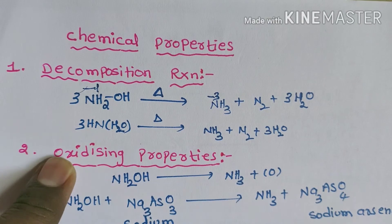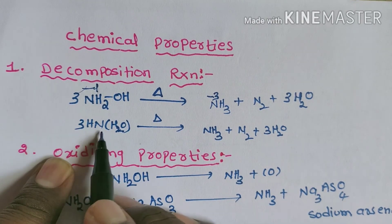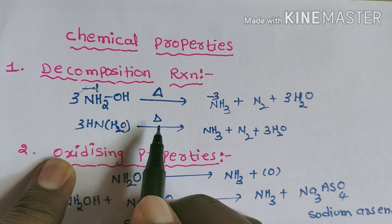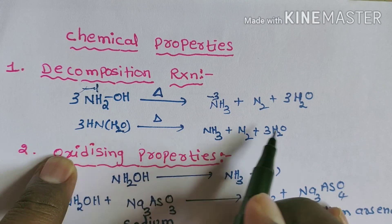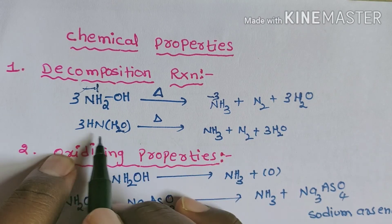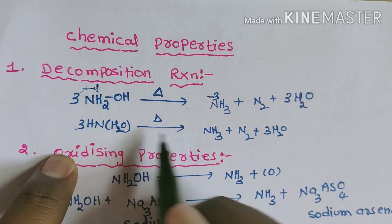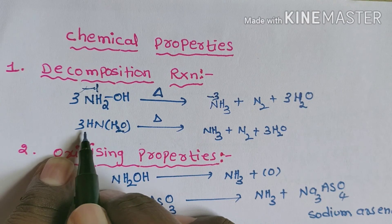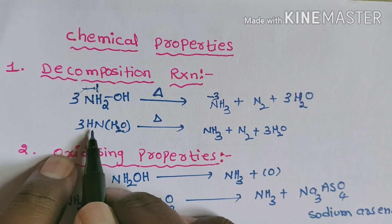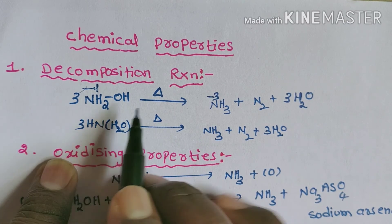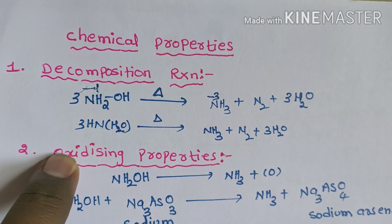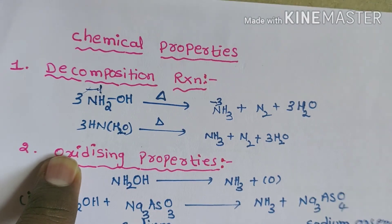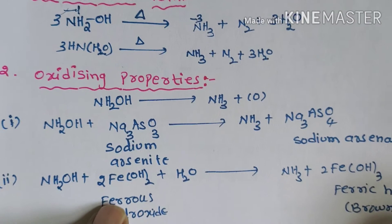Alternatively, we can write hydroxylamine as NH·H₂O; on decomposing, the water molecule goes outside and to get ammonia we require three hydrogen atoms from NH, so we take three hydroxylamine molecules. This is another way to balance the decomposition reaction.